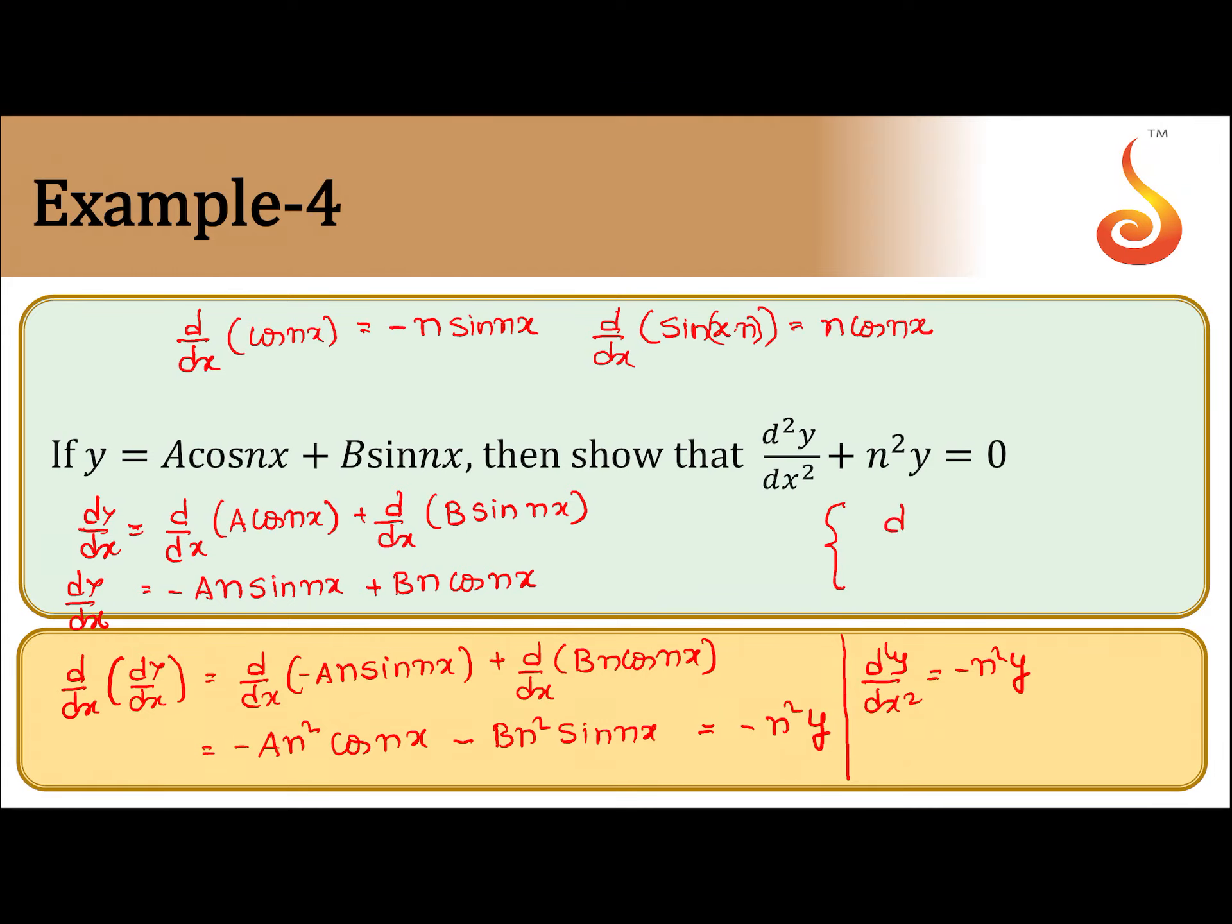Similar result you might have seen in physics: d²y/dt² is equal to minus ks. It comes in simple harmonic motion. This means double derivative of displacement is equal to minus some constant times displacement, or this is also called acceleration. Acceleration is equal to some constant times displacement in simple harmonic motion.